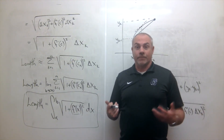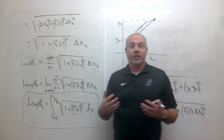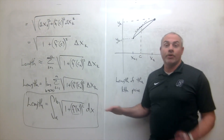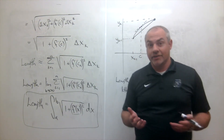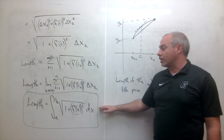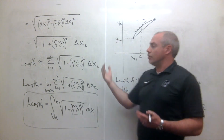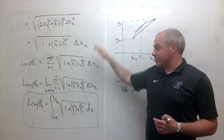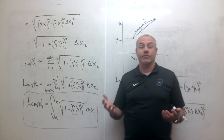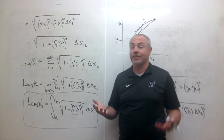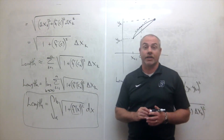Why did I go through all of this derivation instead of just starting with the formula? It's really important in mathematics and calculus to realize this stuff isn't magic. These formulas aren't magical — we can prove they are true. I want to show you that this didn't come out of nowhere: we derived it using the distance formula and the Pythagorean theorem together with the mean value theorem.